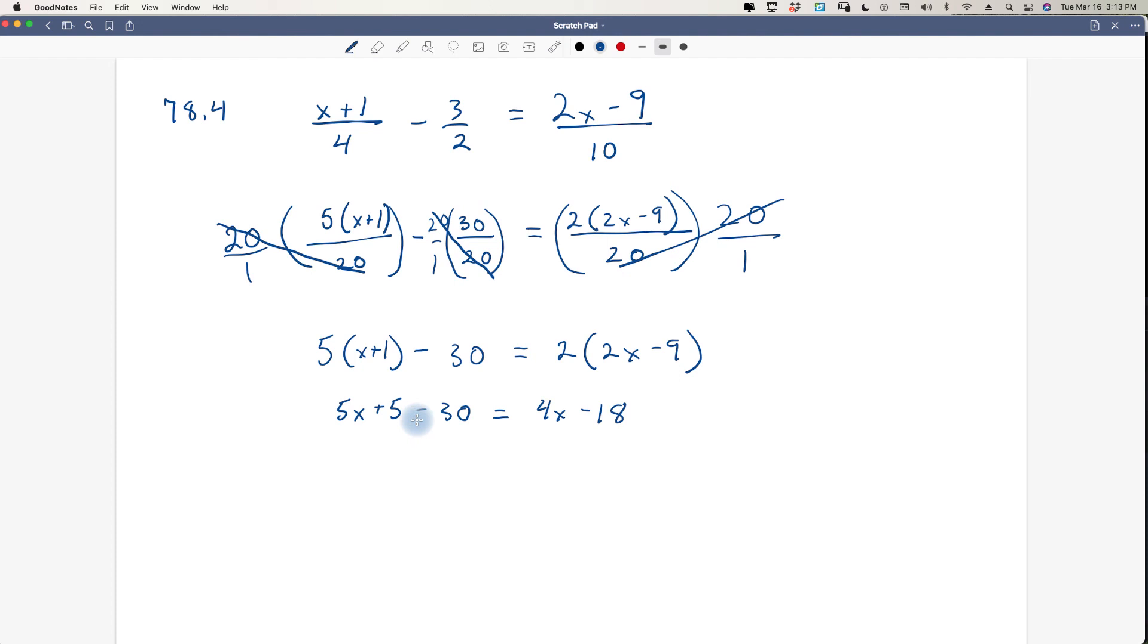Now we swim our fish. A positive 5 and a negative 30, that's going to give us a negative 25. I'm not swimming my fish, I'm just combining these two. So let's swim this to this side. So we have a negative 25, we're going to swim a positive 25. So let's swim our x to the other side, negative 4x. That's going to leave us with an x equals negative 18 and a positive 25 is going to be a positive 7. So x equals positive 7. And that's the answer.